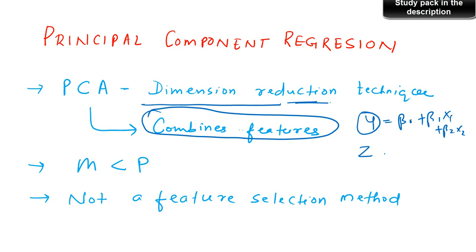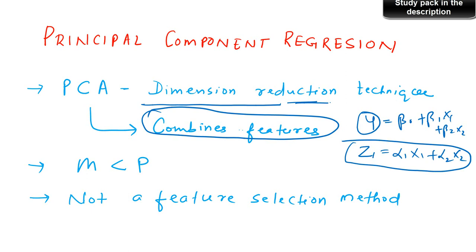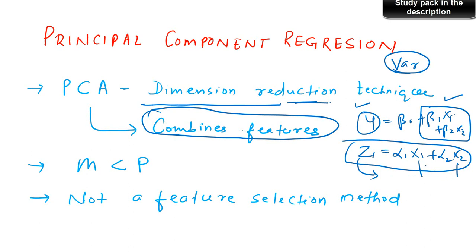For instance, it could combine them to be g1, which is a linear combination α1*x1 + α2*x2. So g1 is a linear combination replacing x1 and x2. The idea is that the variance explained by x1 and x2 — because that is the intention of regression, that your predictors should explain the variation in y — will be done by g1 to a similar extent as what x1 and x2 were doing.